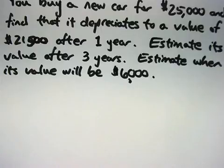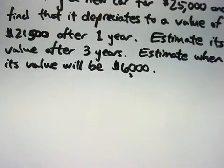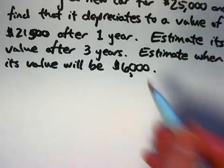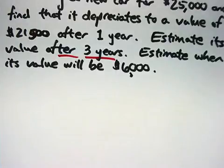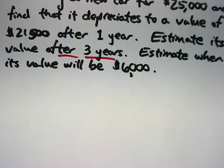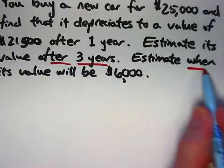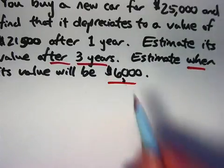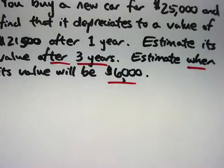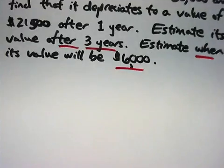We're pretending that one year has gone by since we've bought this car, and now we're trying to estimate its value after three years. The implicit assumption in the way this is stated is that three years after you bought it new. If I meant three years after the present, which is one year after you bought it new, then I would have said after three more years or something like that. And another implicit assumption is when we estimate when its value will be $6,000, that again would mean after you bought it.